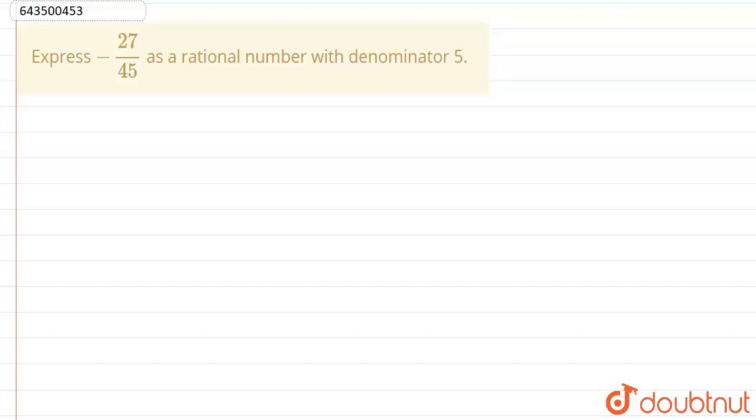Hello students, in this question it is given as express minus 27 by 45 as a rational number with denominator as 5.